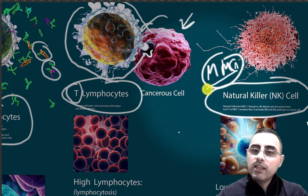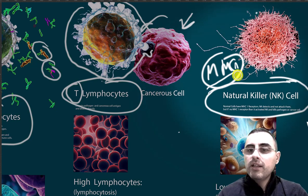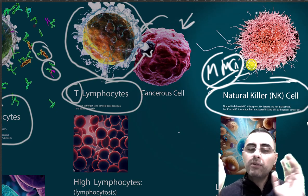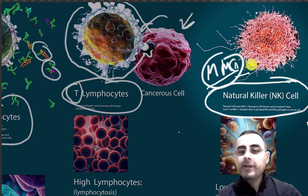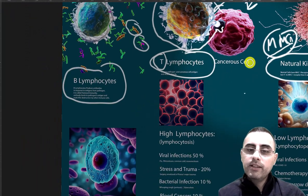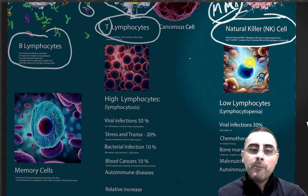Natural killer cells check whether a cell is normal. If it is normal, they don't attack. If the cell is not normal, they attack it immediately. That is what a natural killer cell does.